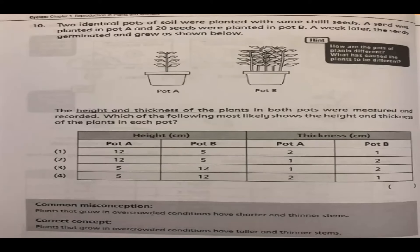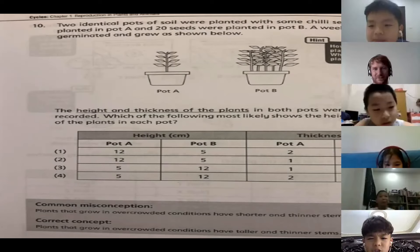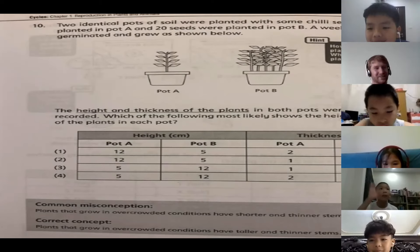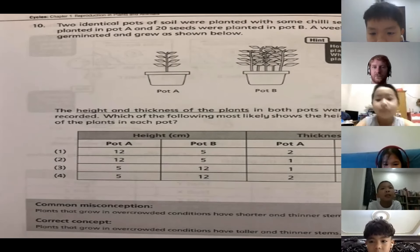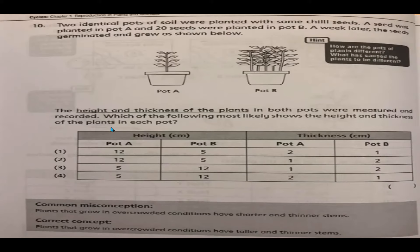Another student thinks number three because pot B is more than pot A in centimeters. No, I don't think that's the right answer. Someone else says four. Why four? The correct concept is that as plants grow in overcrowded conditions, they continue as taller and thinner stems. Pot B has many chili seeds — so they are taller and they are thinner.